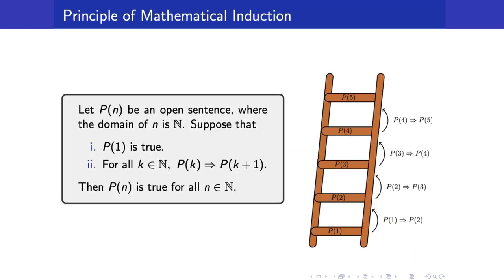Here is the principle of mathematical induction. Suppose we have an open sentence P of N, where the domain of N is the set of natural numbers. Suppose that P of 1 is true, and second, for all natural numbers K, the implication P of K implies P of K plus 1 is true. If these two statements are true, then P of N must be true for all natural numbers N.